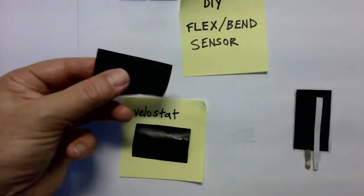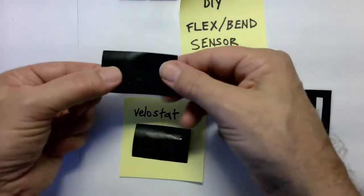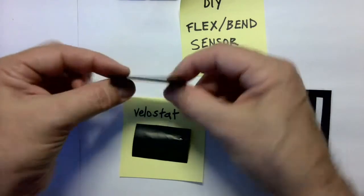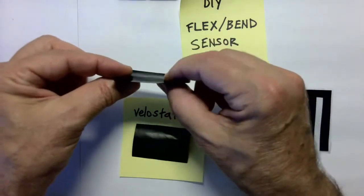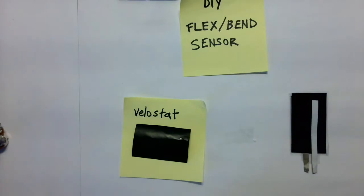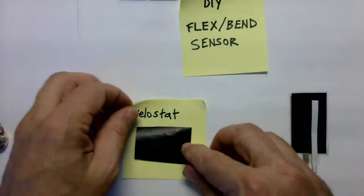And remember that Velostat is sort of semi-conductive. It's this weird property where some electrons go through the material and some don't. And that's what gives us the bendy sensor. So we've got Velostat.